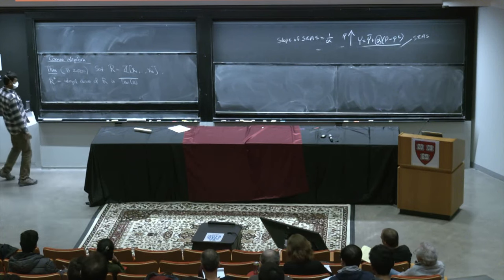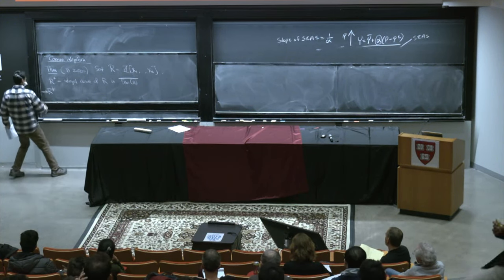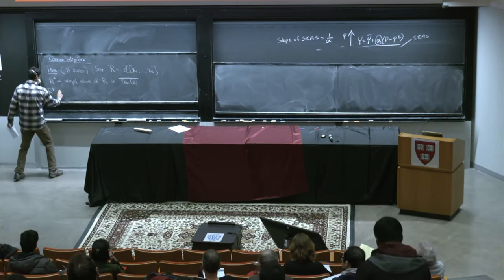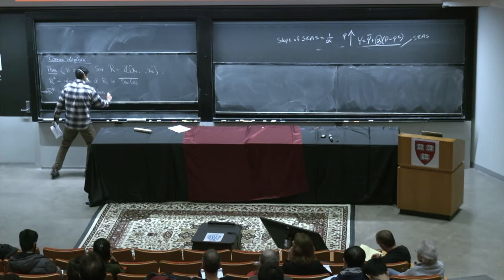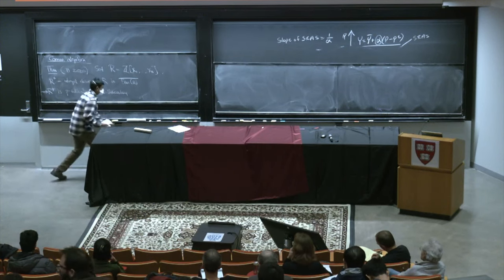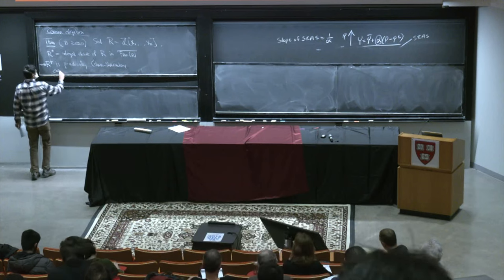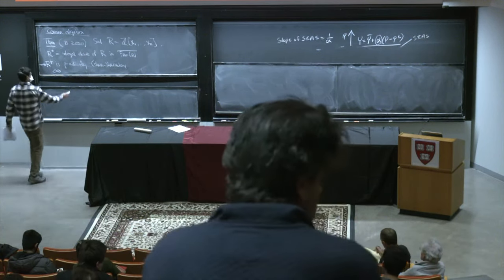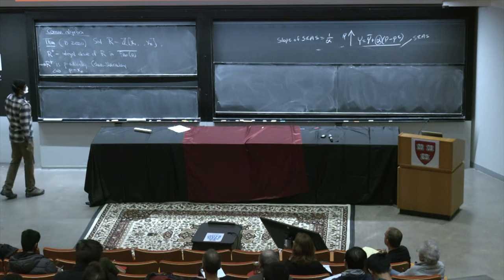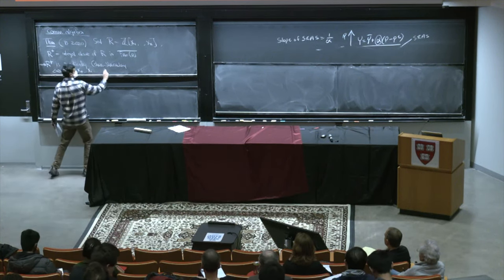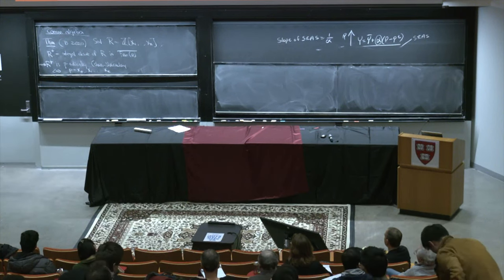So what do we prove about this? The theorem has various formulations; I will write down probably the easiest one first. R+ is p-adically Cohen-Macaulay. What this means is the following: if you look at the sequence starting with p, which I'll label x0, then x1 through xn — so you look at the sequence of n+1 elements of the ring R — the claim is that this is a regular sequence on R+.